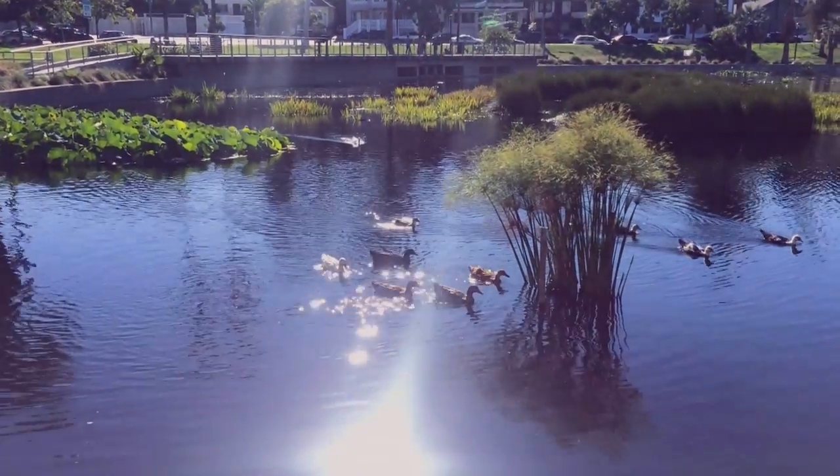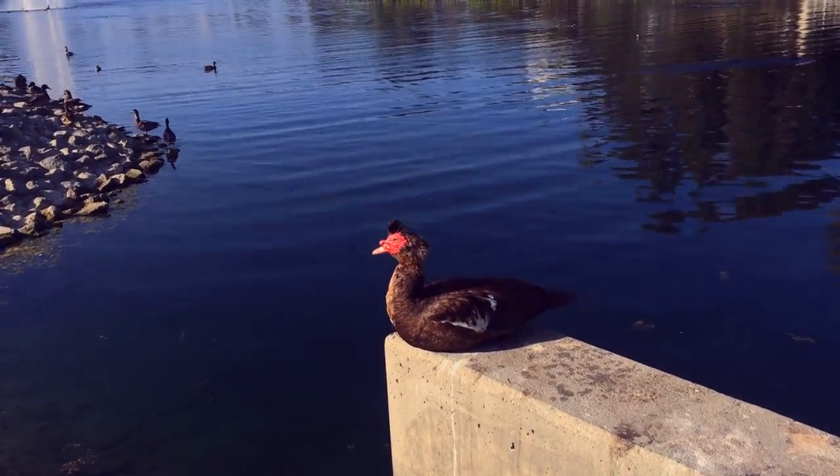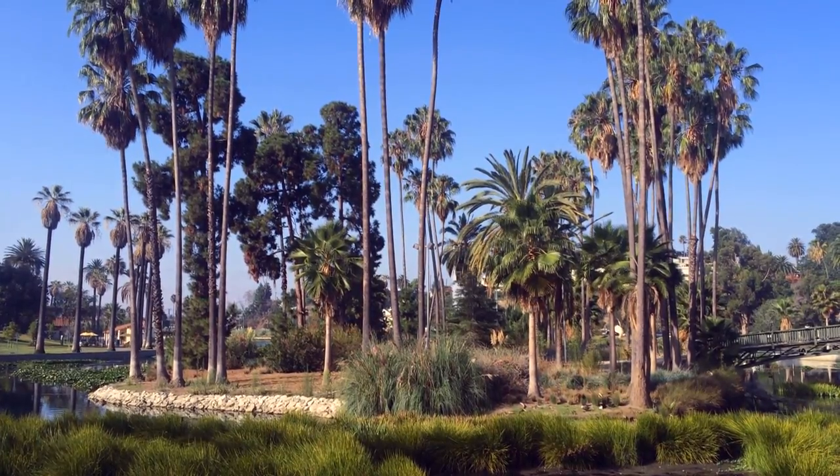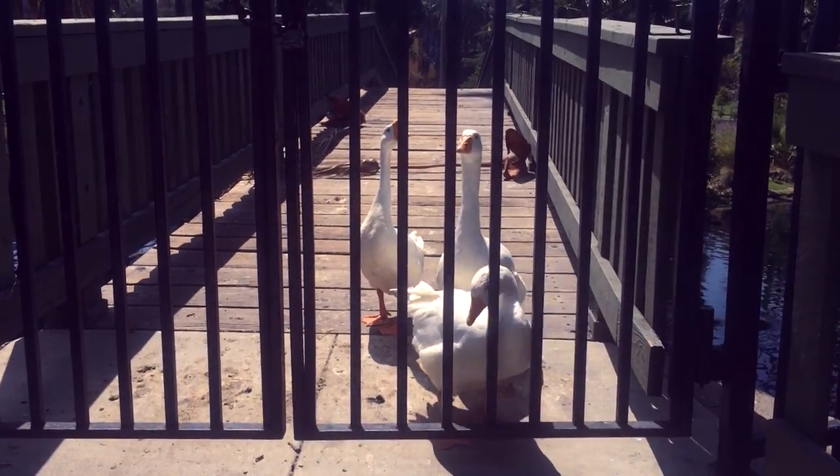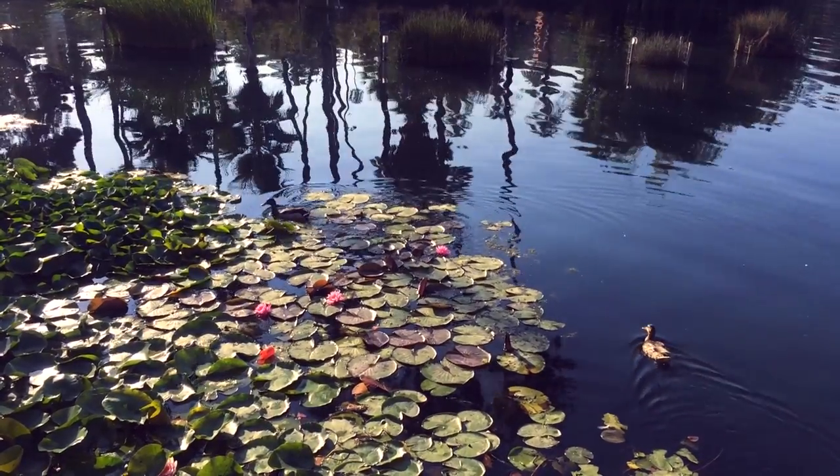Another great thing about Echo Park Lake is all the different types of birds that live there. There's even an island in the middle of the lake that's dedicated just to birds, and it's closed off from the public. And in the spring, there's lots of cute little baby ducks and geese.